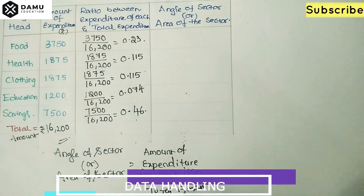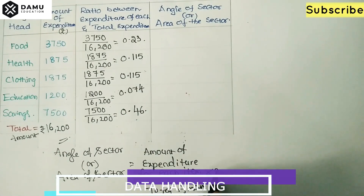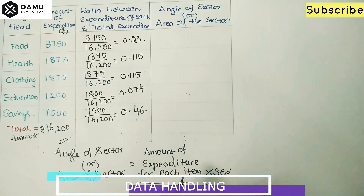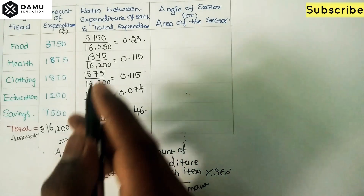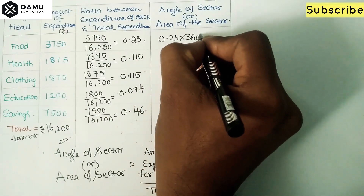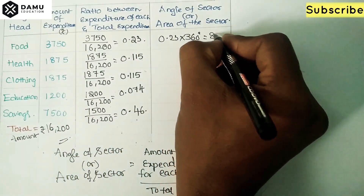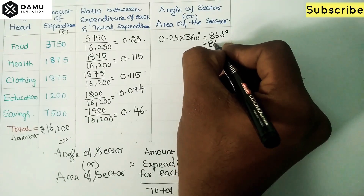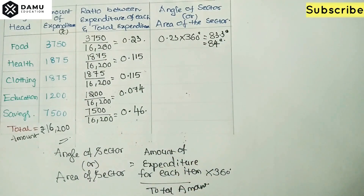So the formula is: (amount of expenditure / total amount) × 360 degrees. For food, the ratio was 0.23, so 0.23 × 360 = approximately 83.3 degrees, which we round to 84 degrees.